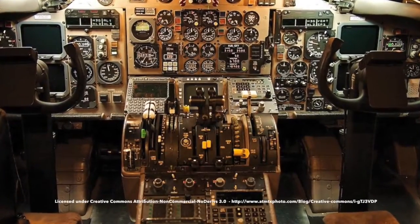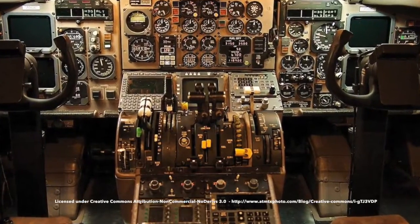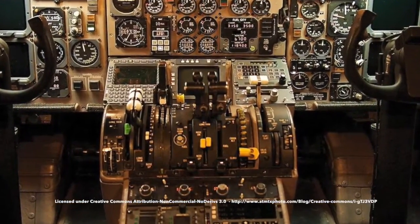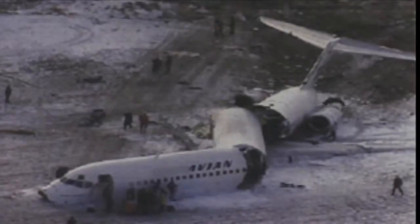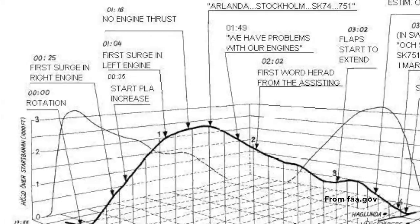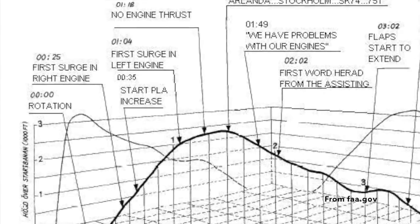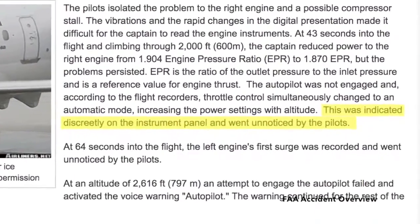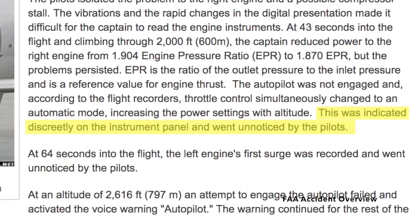Situations arise where the pilot may misunderstand automation actions or regain control of the aircraft in an unstable state. For example, in Scandinavian Airlines Flight 751, the pilot directed a decrease in throttle due to unexplained engine surges. However, the automatic throttle control subsequently increased the throttle due to an increase in altitude. This was not a failure in automation. The system responded exactly as it should, given the situation.